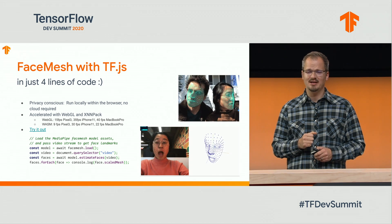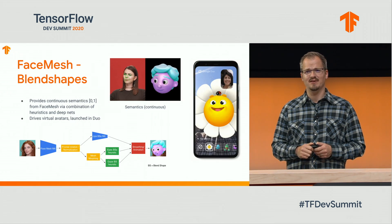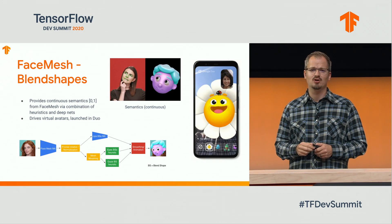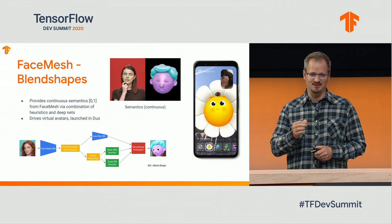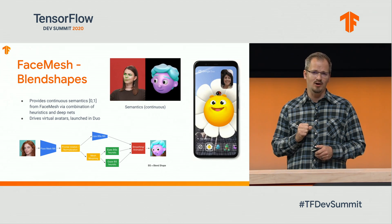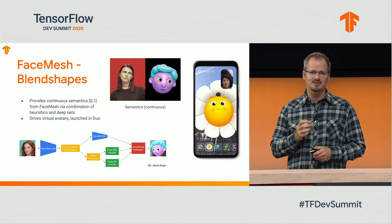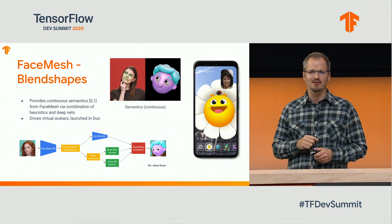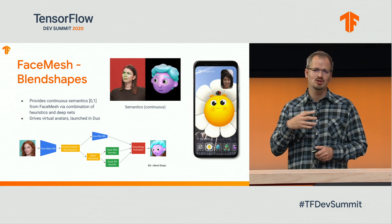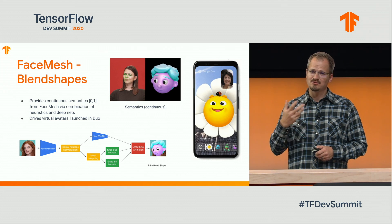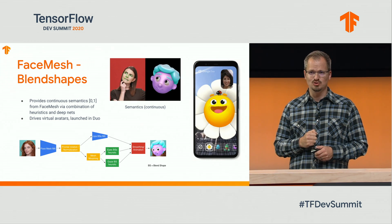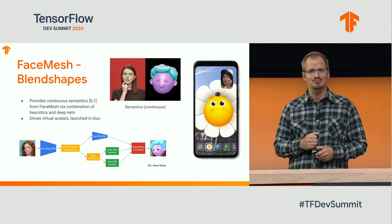Before we talk about the next solution, one more application of the face mesh is that with an additional network, we can compute continuous semantics from it — things like how much your mouth is open, how wide your eyes are open, or whether you're smiling. We can use these semantic signals to drive virtual avatars, like those recently launched in Duo for self-expression effects.